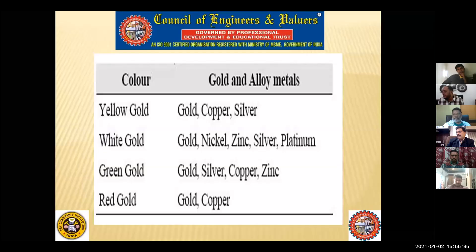If you mix copper and silver, the color of the gold will be yellow. If you mix platinum, nickel, zinc, and silver, the color of the gold will be white. To get red gold, you mix copper apart from other metals.